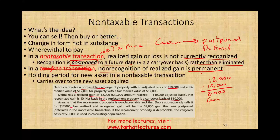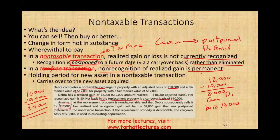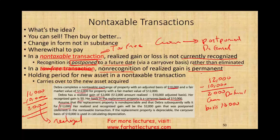Assume the replacement property is non-depreciable and Deborah subsequently sells it for $12,000. Her basis in this property is $10,000 (carried over). $12,000 minus $10,000 basis gives a $2,000 gain — the $2,000 that was deferred during the exchange is realized when the asset is sold. She did not pay taxes at the time of the exchange; maybe she sold the asset two or three years down the road, and then it becomes taxable.